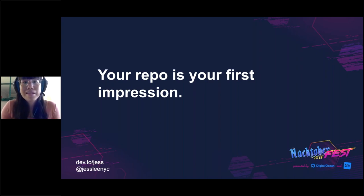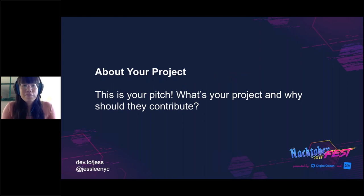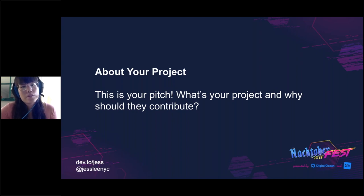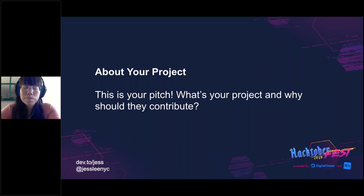I'm going to talk through some basic things you'll want set up for your repo. First things first, you need to tell people what your project is about — this is your 30-second elevator pitch to describe the project and why they should contribute, and what the value proposition is. Keep it super friendly and short, and think about what you want people to remember about your project to get them excited. Everything else besides this blurb is going to be about expectation management and making it easy to contribute to your project.